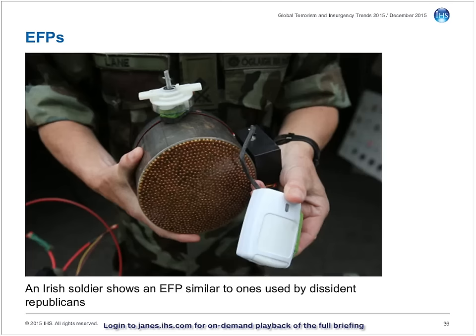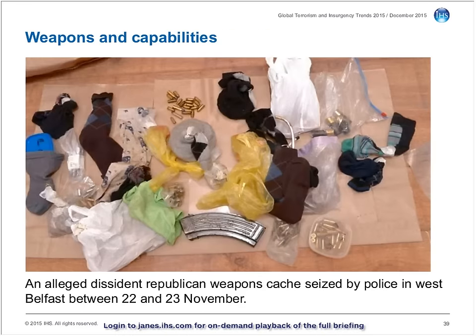The devices used range from crude IEDs to more sophisticated explosively formed projectiles, or EFPs. Police announced on the 24th of November that a weapons cache belonging to suspected dissident Republican militants, containing ammunition, mercury tilt switches and detonator cords, had been seized in West Belfast. Security sources stated that the items were believed to have been intended for use in under-vehicle IED and other IED attacks in the run-up to Christmas.